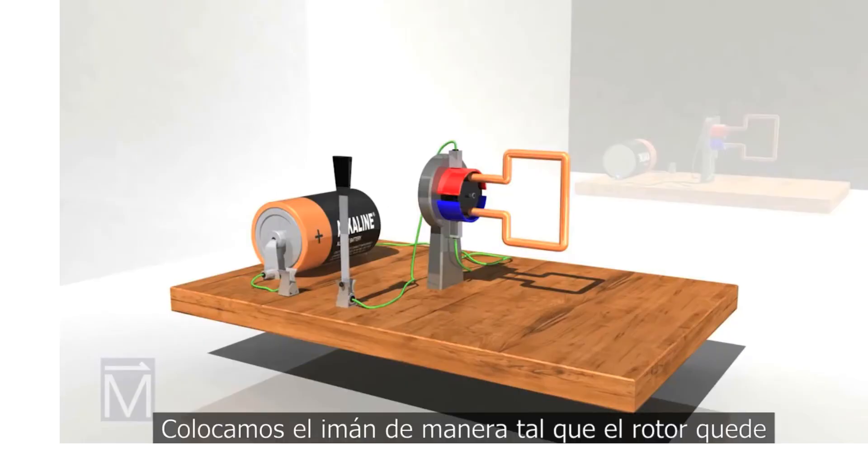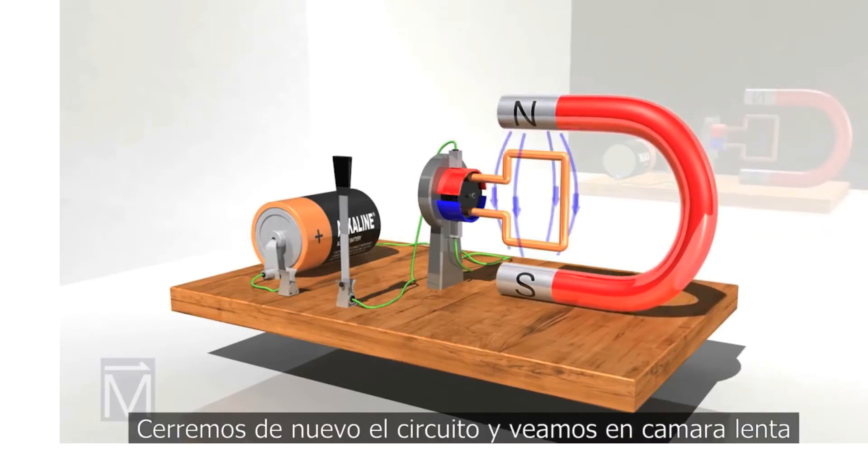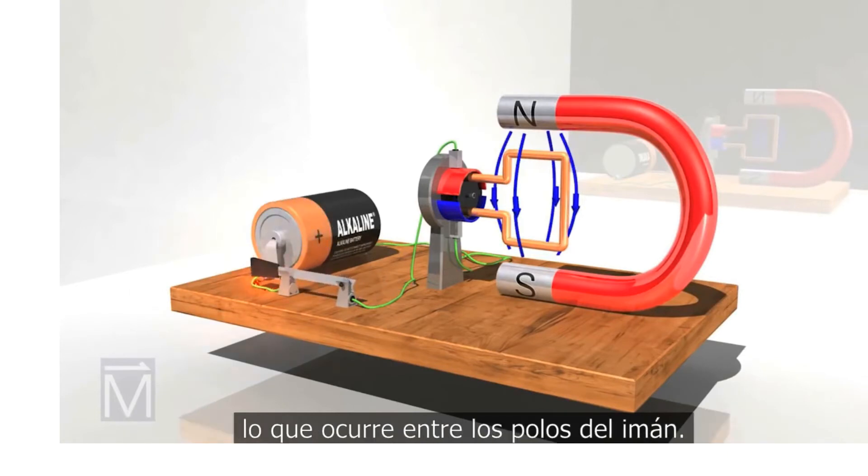We position the horseshoe magnet so that the rotor is right in the middle of the magnet's field. Let's power the circuit again and watch, in slow motion, what happens between the poles of that magnet.